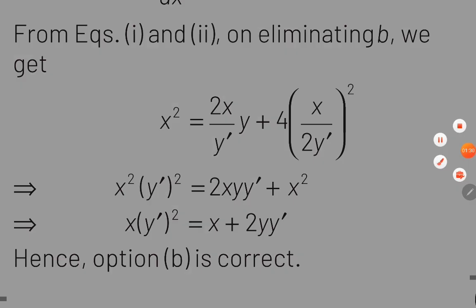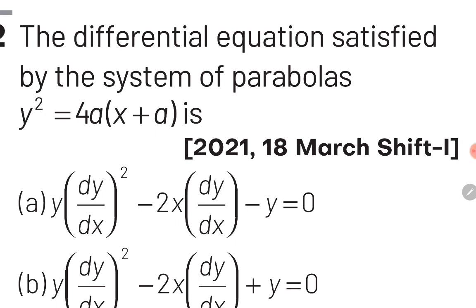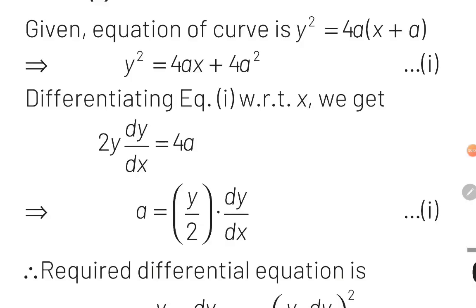Now let's move ahead to the next slide. The second question of the chapter is the family of parabolas y² = 4a(x + a). This question is exactly similar to the last one in which again we have to take the derivative on both sides. After taking the derivative, we will obtain the value of unknown constant a, and once we obtain the value of a, we will back substitute this into the main equation.